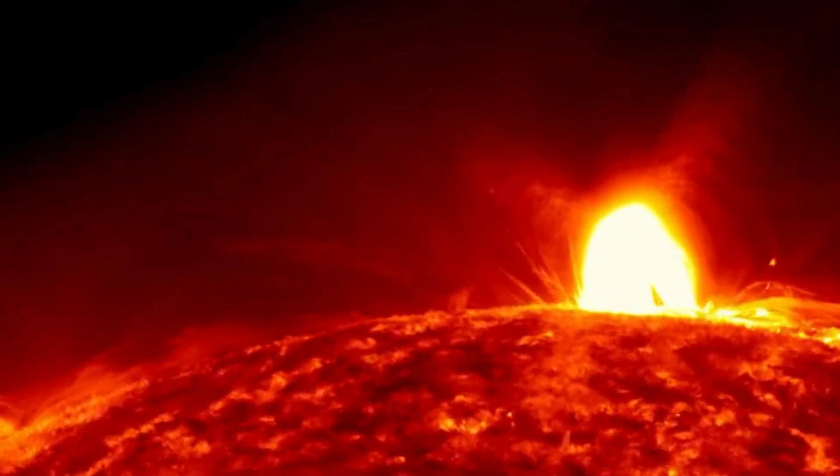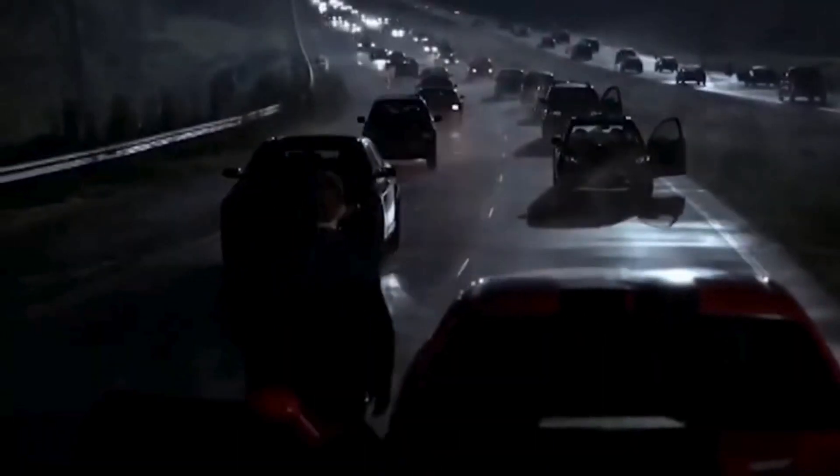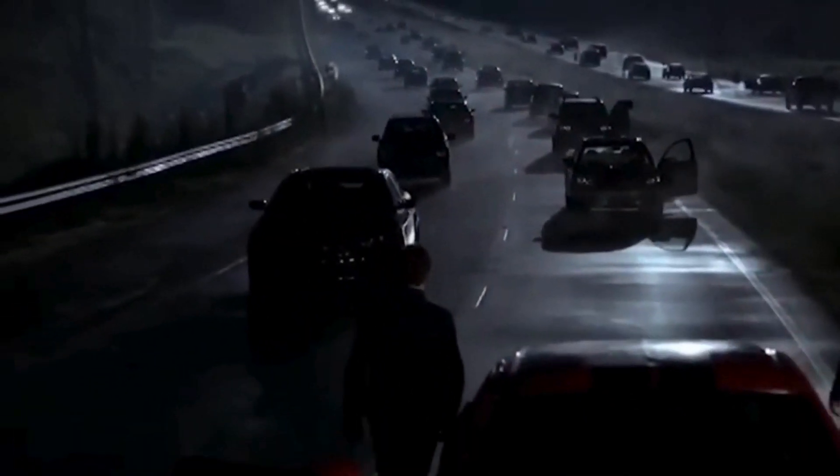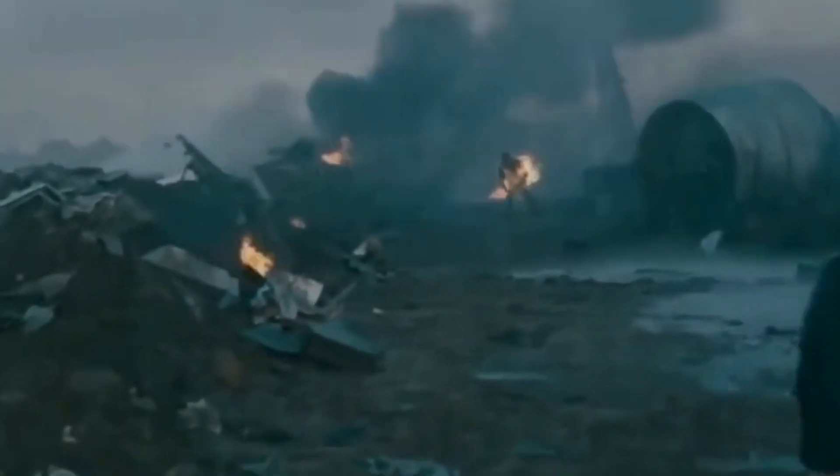As we mentioned, in the event of a collision with a large solar storm, it's possible that electricity and internet worldwide would be cut off. Now, you might wonder how this event is related to the extinction of the human race.